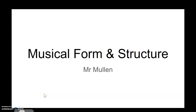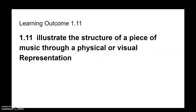We're going to look at the topic of musical form and structure, which is part of the new Junior Cycle curriculum. The learning outcome is 1.11: to illustrate the structure of a piece of music through a physical or visual representation. This is a bit of fun — we explored crossing over between art and music in class. These are my tips and ways of doing things, but feel free to experiment.